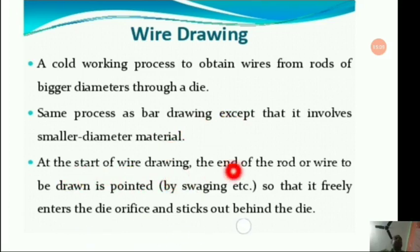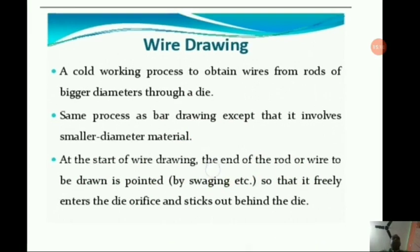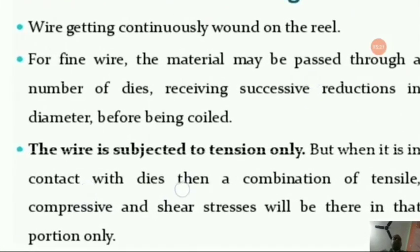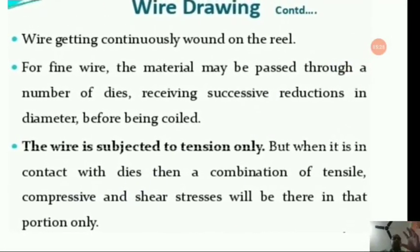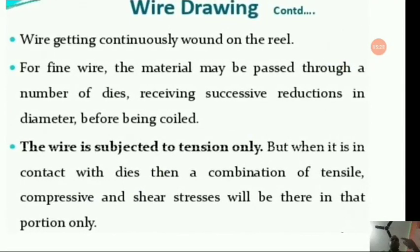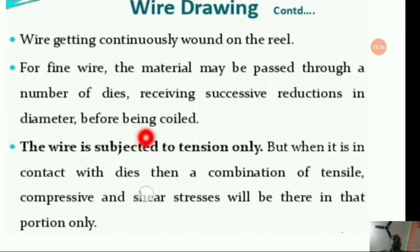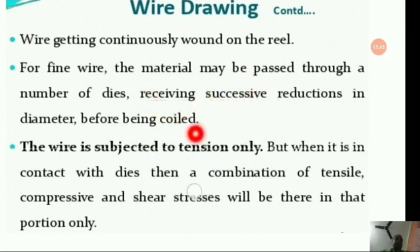At the start of wire drawing, the end of the rod or wire to be drawn is pointed by swaging so that it freely enters the die orifice and sticks out behind the die. The wire is continuously wound on a reel. For fine wire, the material may be passed through a number of dies receiving successive reductions in diameter before being coiled.